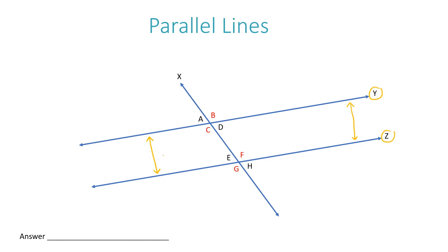You could think of them sort of like the wheels on a car — the lines they leave as their track in snow or mud. Those two tracks are never going to meet because they're always attached to the car, always moving side by side, and it's not possible for them to cross. So if somebody were to ask you to write the parallel lines for this example, you could write it as line Y and line Z.